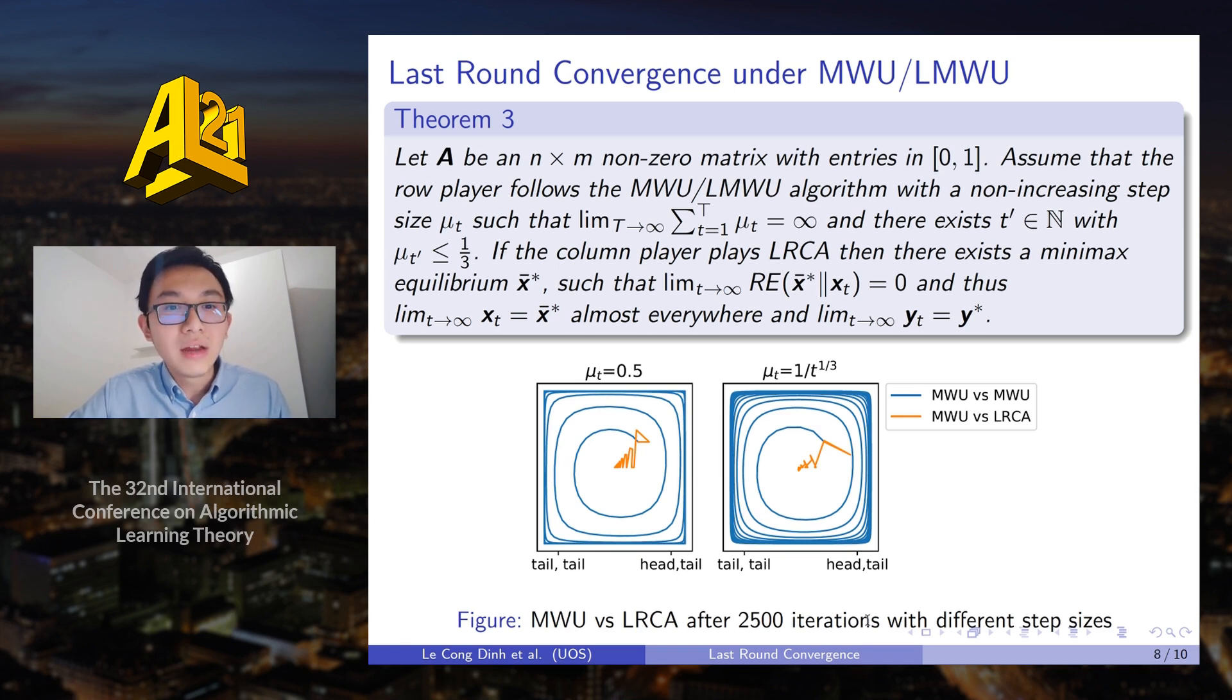So as we can see in the figure, the orange trajectories converge nicely to the min-max equilibrium of the game, which is at the center of the figure. And it's a very different movement compared to the case when both players use multiplicative weight update, as we can see in the blue trajectory. And we consider this with different learning rates. One is constant learning rate 0.5, and the other one is decreasing learning rate.